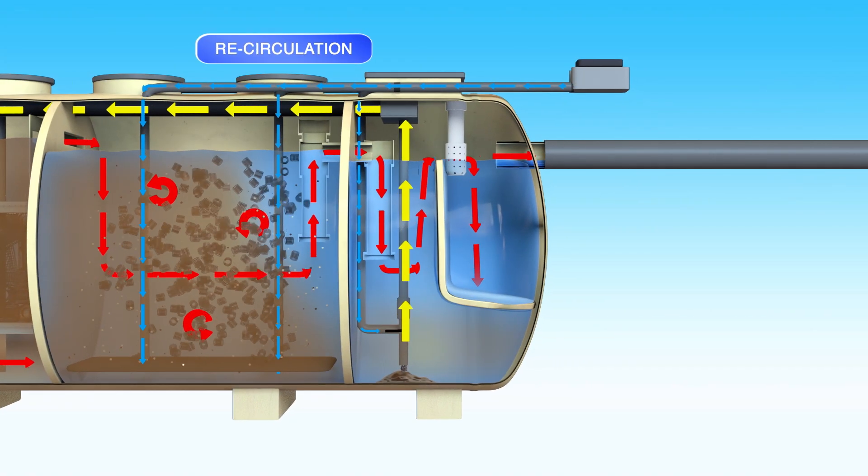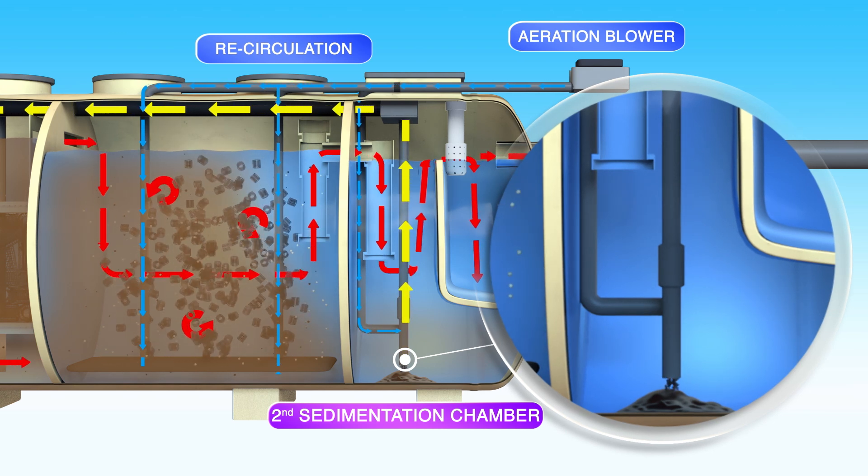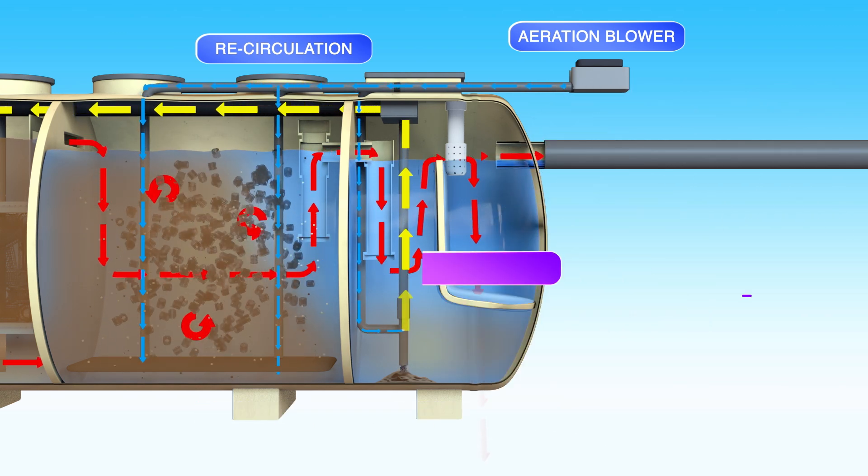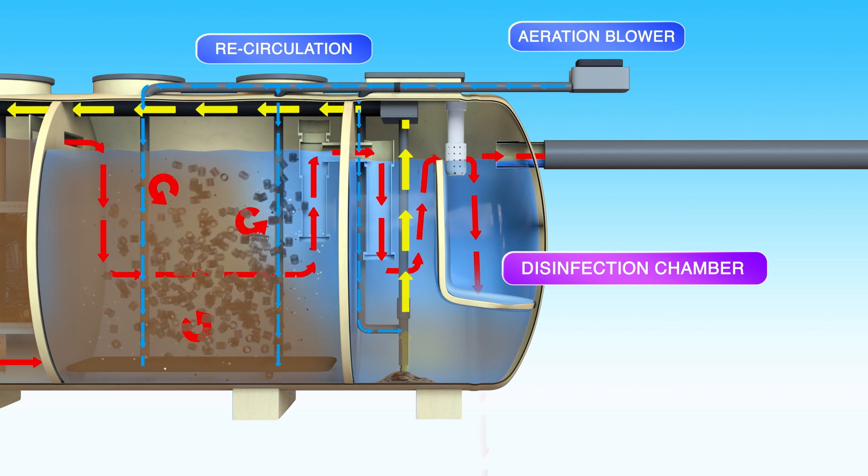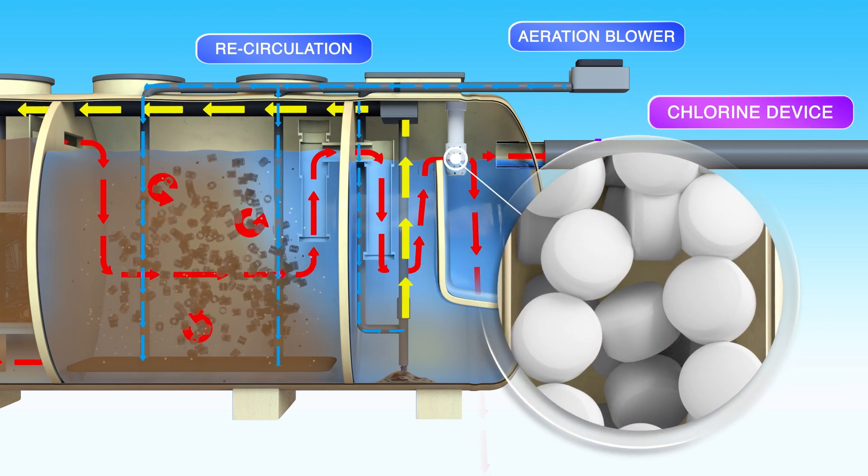Redirecting any remaining solid waste back to the first chamber, the treated water is released to the environment through the fourth chamber after disinfection using the chlorine device.